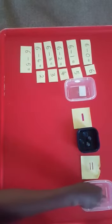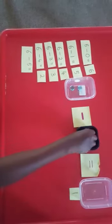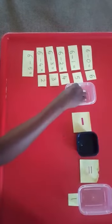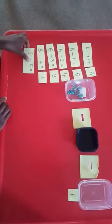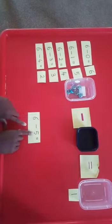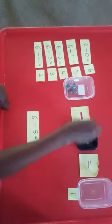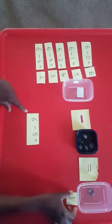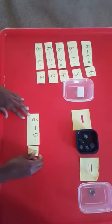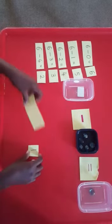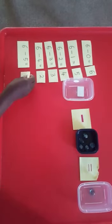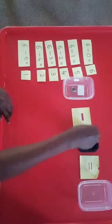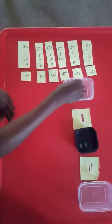Let's get the next equation: six take away five. Check — there's six. I take away five: one, two, three, four, five. Six take away five equals one, so there is one stone remaining. I find the answer card one and put it next to the equation. Six take away five equals one.